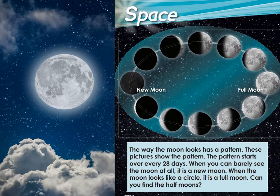Okay everybody, so let's start by talking about something that is really close to our planet Earth - it's that white sphere in the sky, the moon. There's a lot to learn about it. Let's read what's in our magazine. The way the moon looks has a pattern. These pictures show the pattern. The pattern starts over every 28 days. When you can barely see the moon at all, it is a new moon. When the moon looks like a circle, it is a full moon. Can you find the half moons?